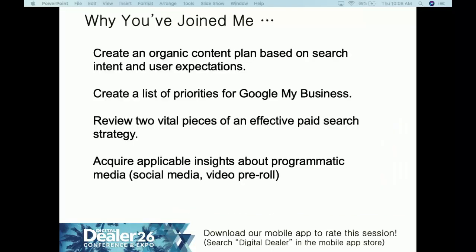Here's what we're going to cover today. Number one: how to create an organic content plan based on search intent and user expectations — we're talking about actual shoppers, their intent, and what they expect when they click into your website. We're also going to talk about a list of priorities for your Google My Business, which is an increasingly important gateway to your website. We'll review two vital pieces of an effective paid search strategy: responsive search ads and your quality score.